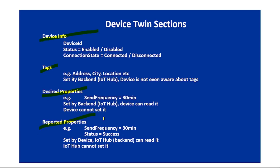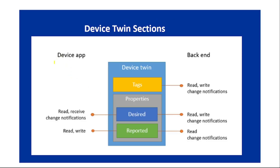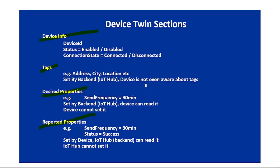Let's understand this with a diagram. We have the device app (the IoT device) and the backend (Azure IoT Hub). Device info includes device ID, connection state, and status. Tags can only be set by the backend application — the IoT device is not even aware of the tags.